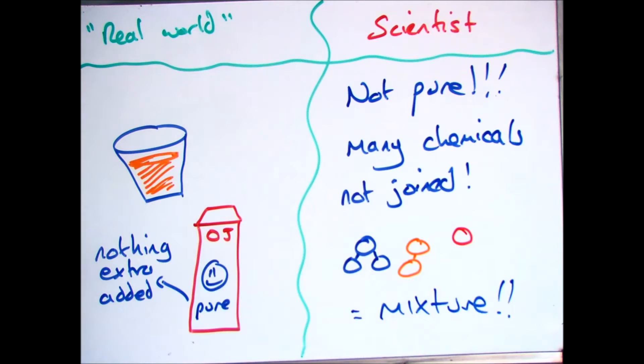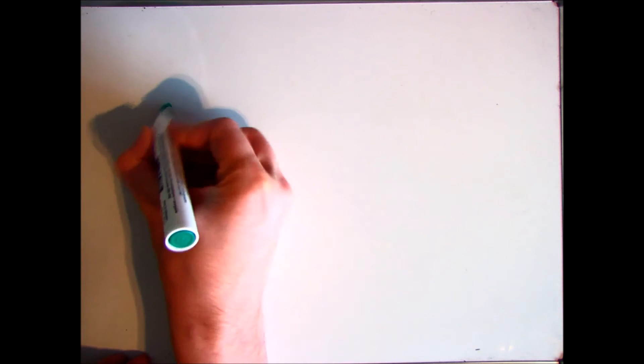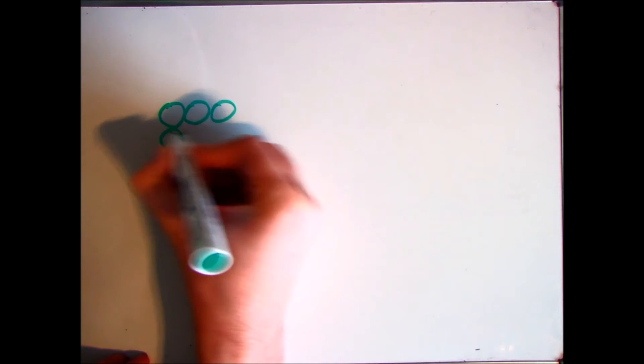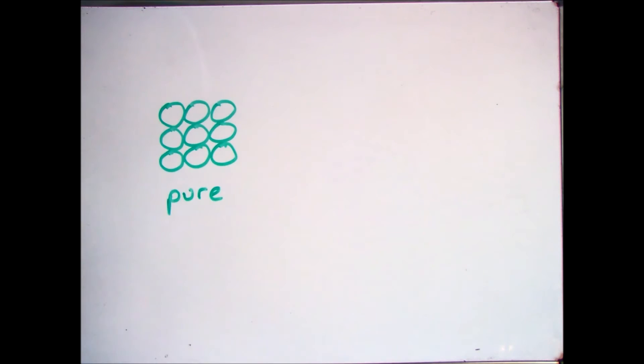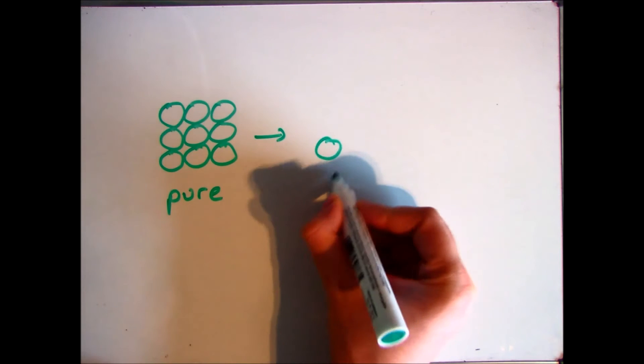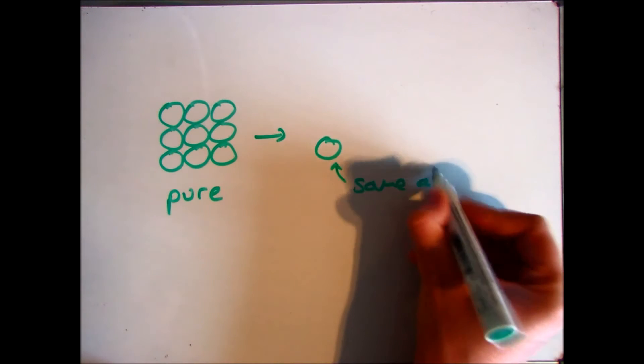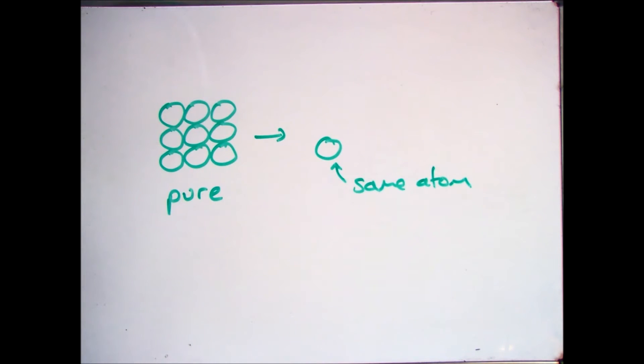To look at what pure is from a scientist point of view, we have to look at the particle model. So this is an example of a pure element that I'm drawing. It's got one element, nothing else, so we class it as pure. If we break that down we would still have the same thing, we just have one atom of that pure element.